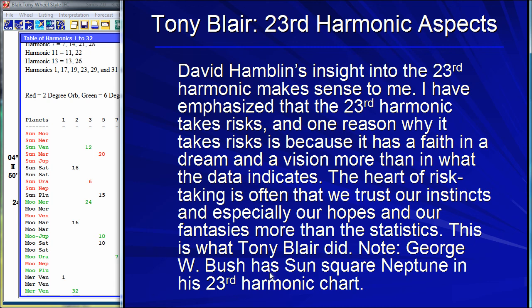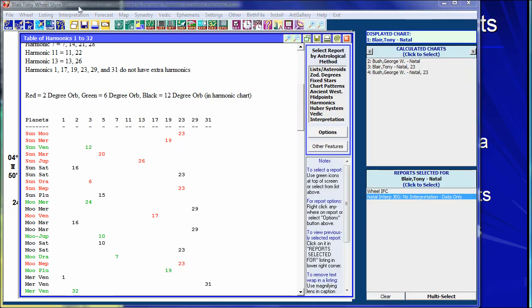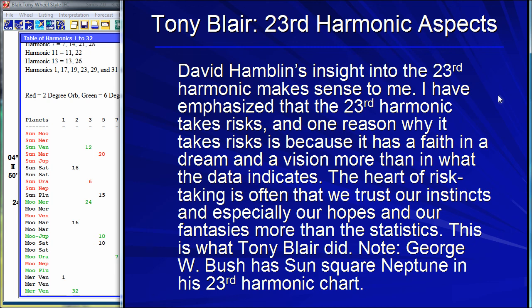George W. Bush, who was leading the charge into Iraq, has Sun square Neptune in the 23rd harmonic. If you know about harmonic charts, conjunctions, oppositions, and squares in the harmonic chart give that tone. So Tony Blair has Sun-Moon-Neptune in the 23rd harmonic, and George W. Bush has them squared in the 23rd harmonic. You can also look at the harmonic charts for more information. The bottom line, getting back to Tony Blair, is that he has Sun-Moon-Neptune in the 23rd harmonic, and this is an astrological motivation in his life that led him into this huge mistake.